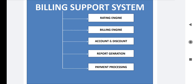The last module in BSS is payment processing. Once all the modules — rating engine, account and discount — have done their task, it is time for payment. The customer pays for whatever services they have used according to the bill charges. Using a payment gateway, the customer pays the bill via online or offline methods such as credit card, debit card, UPI, or any other way. This payment gateway and payment processing also comes under BSS.